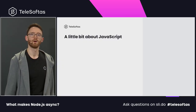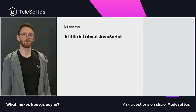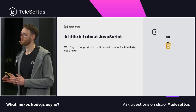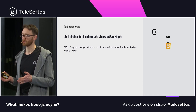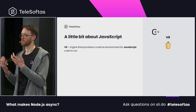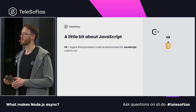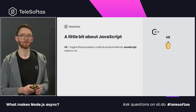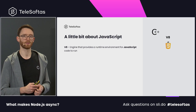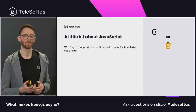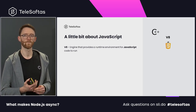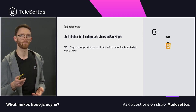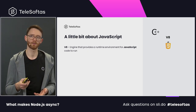Let's warm up with a little bit about JavaScript itself. JavaScript needs an environment to run in. Typically, we use a browser for that. The browser has the V8 engine that provides a runtime environment for JavaScript to run. It is initially implemented with the C language.